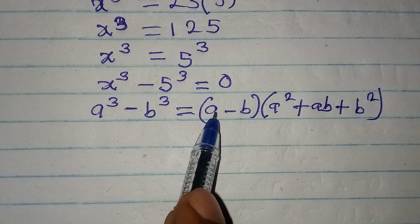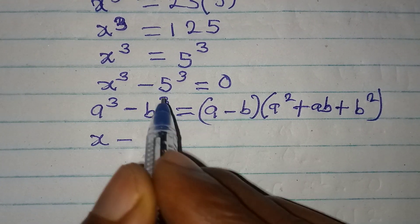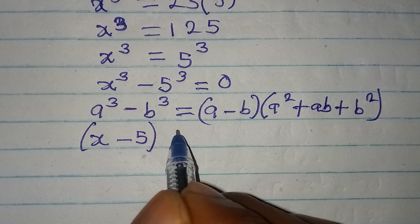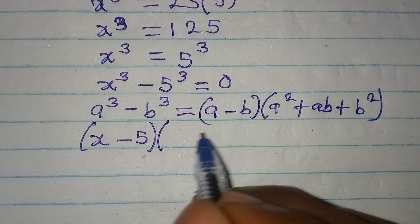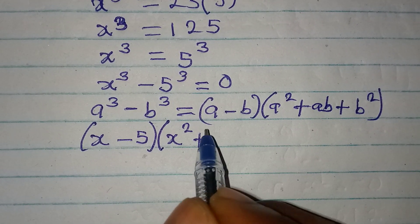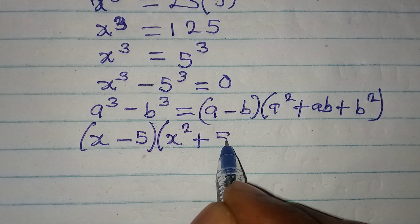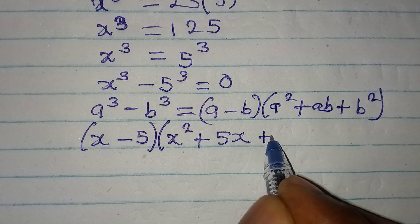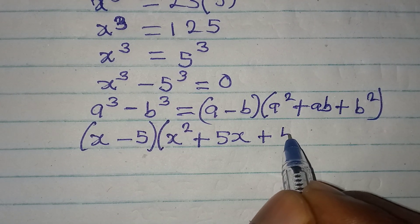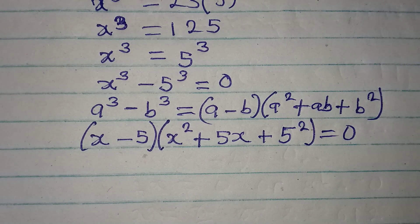In place of a we have x, so write x minus 5 in place of b and close this bracket. Then in the next bracket, in place of a we write x then square it, plus ab which becomes 5 times x, that is 5x, then plus b squared which is 5 squared. Everything equals zero.